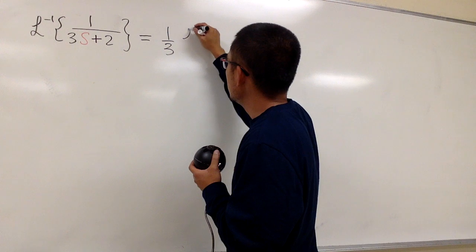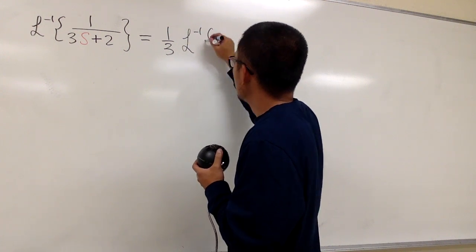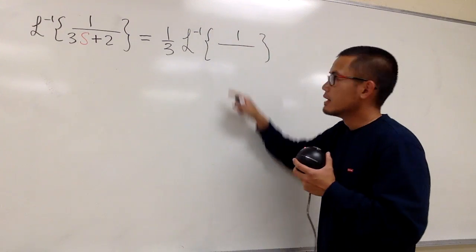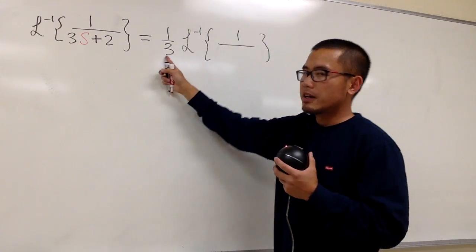And then let's write down the inverse Laplace like this. 1 is still 1 on the top. And technically there's a parenthesis, I'm factoring out 3. All right, let's get to work.